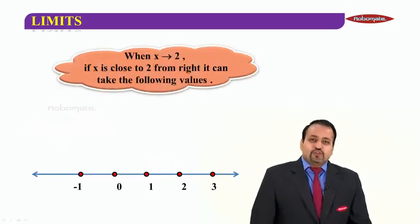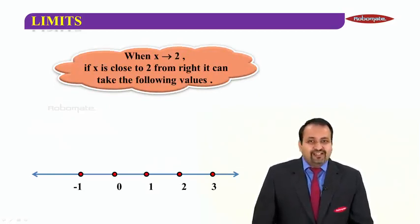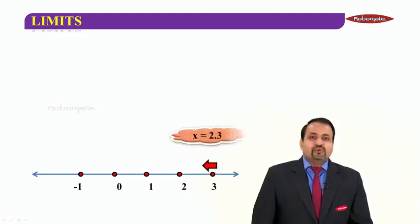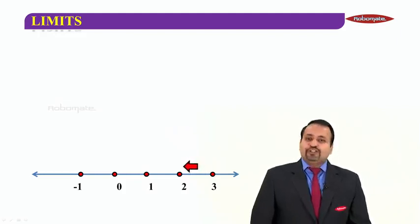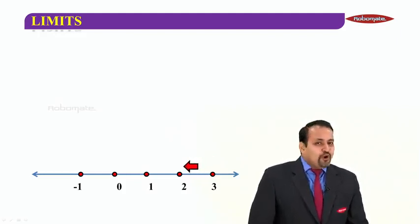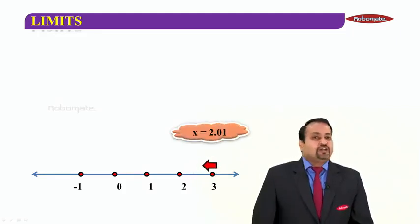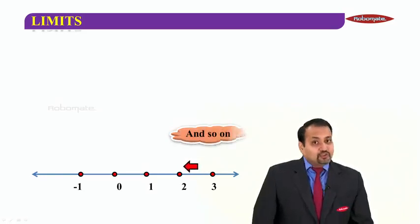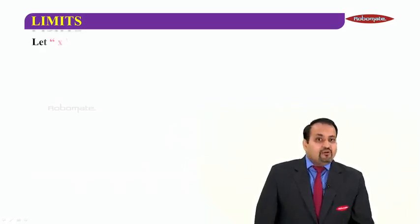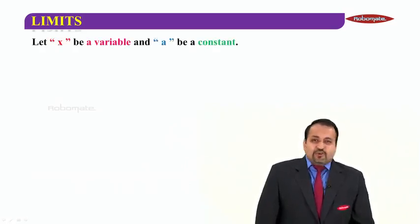When X tends to 2, if X is close to 2 on the right, then it can take the following values. Which are the values? Can you guess? 2.3 it can take, it can take 2.2, it can take 2.1 and 2.01, so on. It can take many other values. So, now the question is clear to us.